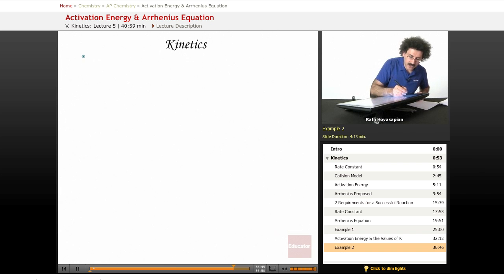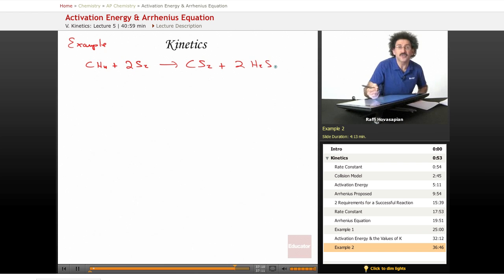We have the following reaction. We have methane, CH4, plus two moles of diatomic sulfur forms carbon disulfide plus two H2S gas, hydrogen sulfide gas.